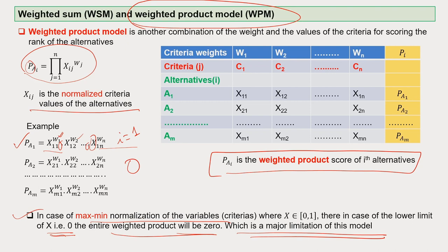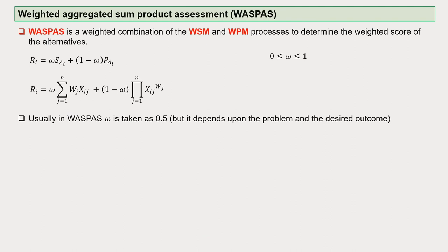In some cases we cannot use WPM for this major reason: if your minimum value of X becomes 0, then everything becomes 0. The next method is WASPASS — Weighted Aggregated Sum Product Assessment. WASPASS is a weighted combination of the Weighted Sum Method and the Weighted Product Method, utilizing both summation and multiplication — that means WSM and WPM together.